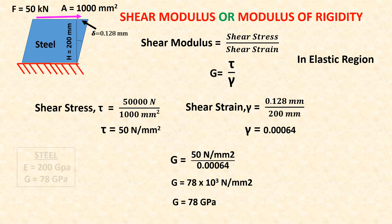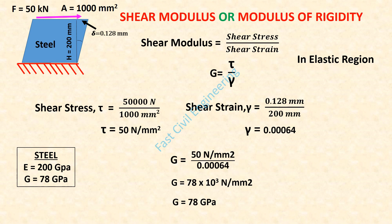Normally, steel has a Young's modulus of 200 GPa and a shear modulus of 78 GPa.